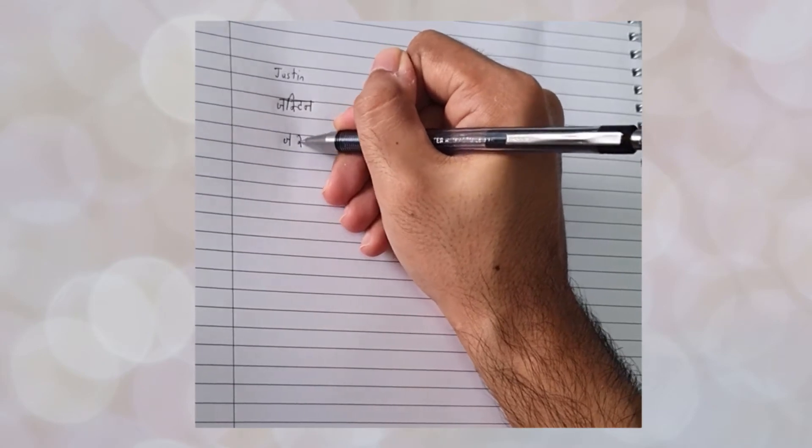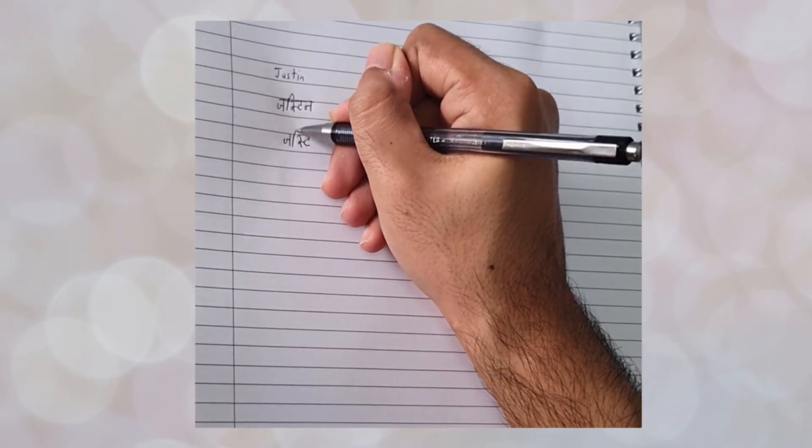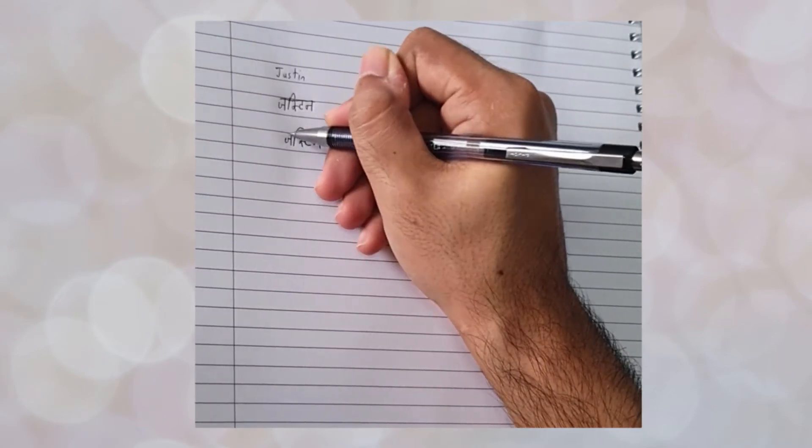So j, half sa, t, i from before the half sa and then the vowel mark.